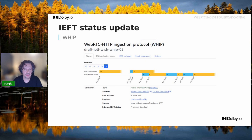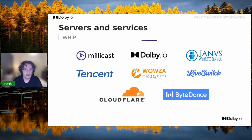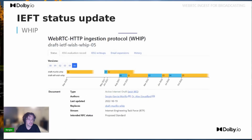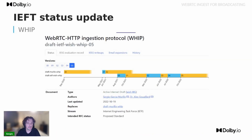The WHIP protocol was adopted by the IETF in late 2020 and is now in a very mature state. Hopefully it will go to working group last call during the next week, so we are really close to having it published as an RFC.